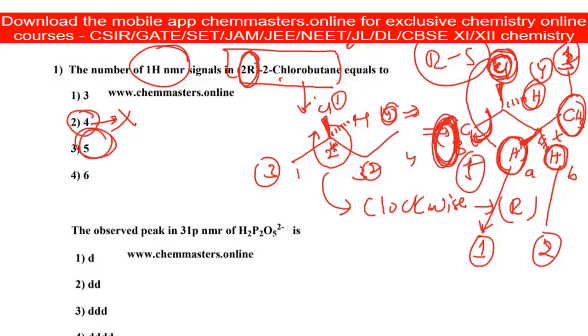For 2R-2-chlorobutane, option 3 is the correct answer. The hint is given R, the RS notation, so the chlorine is going to affect the nature of these two hydrogens, which is why the extra signal is observed.